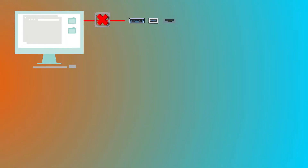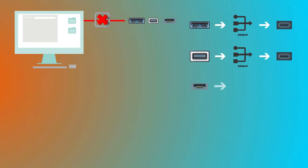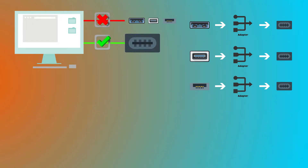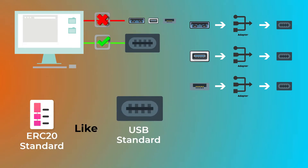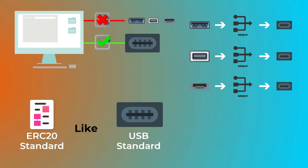You can think of it like having a computer where each accessory you buy has a different connector, so you have to buy an adapter for each connector type. But if all accessories use the same connector type like USB, it gets a lot easier to connect these accessories and you won't need to buy any adapters. The ERC-20 standard is like the USB standard for connectors — it allows exchanges and wallets to integrate with new tokens without any additional effort.